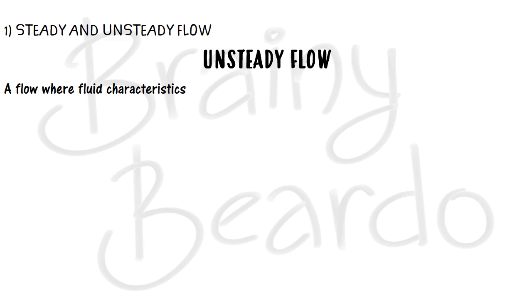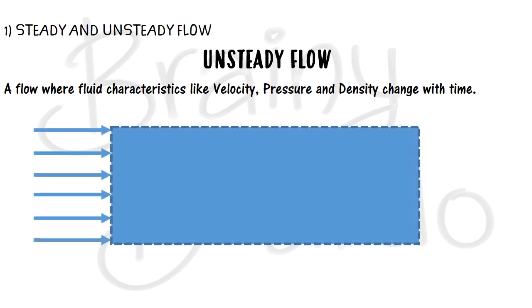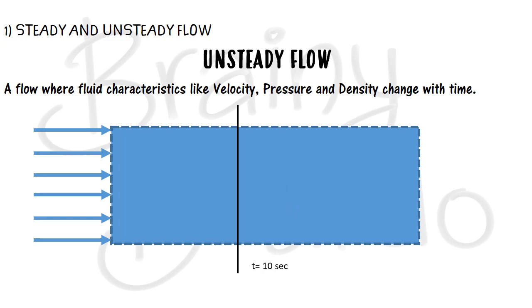Now let me define unsteady flow — a flow where the fluid characteristics like velocity, pressure, and density change with time. Time is the major constraint here, not position. At t = 5 seconds, velocity is 10 m/s and density is 1000 kg/m³. If I increase the time to 10 seconds at that same position, the values have changed — say velocity becomes 5 m/s and density becomes 1200 kg/m³.